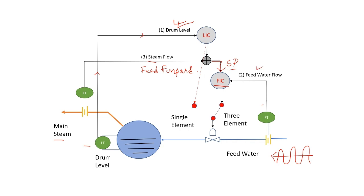So now we have all the three elements: drum level, feed water flow, and steam flow. When all three elements are taken into consideration, this whole control scheme acts more robust and less susceptible to variations in feed water or main steam flow or any disturbance in the process.